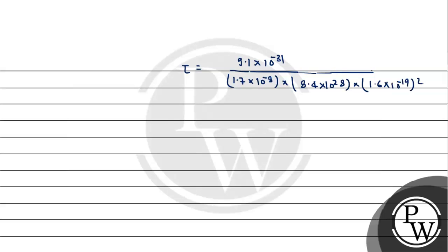So this simplifies to 9.1 × 10⁻³¹ in the numerator.